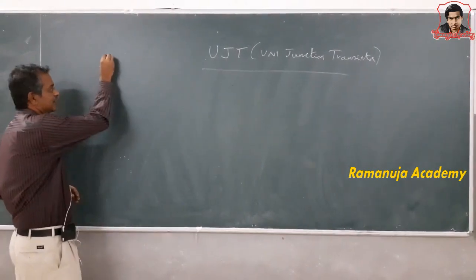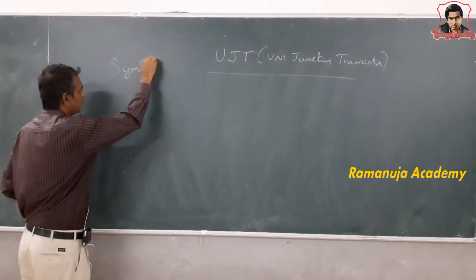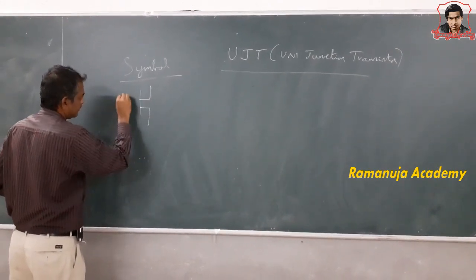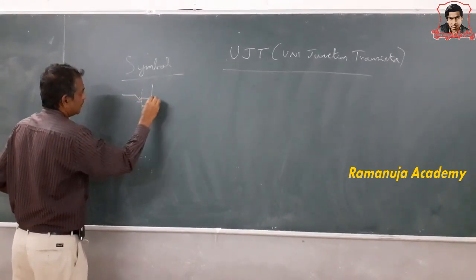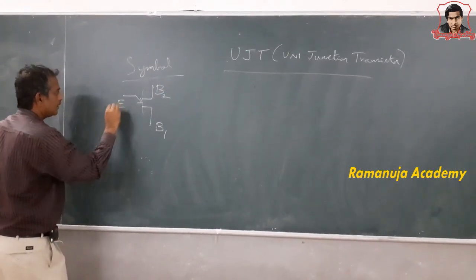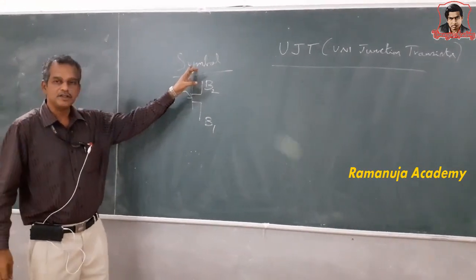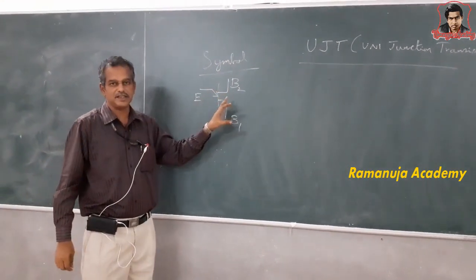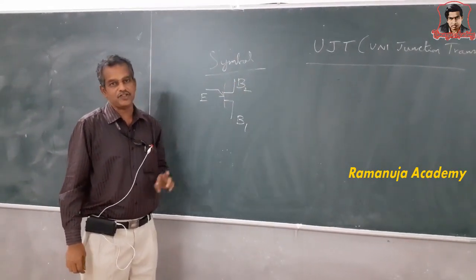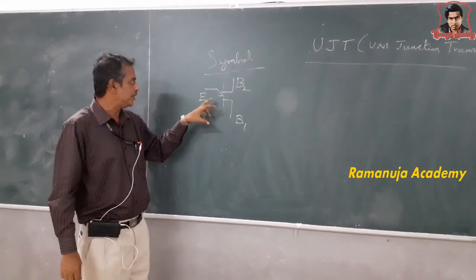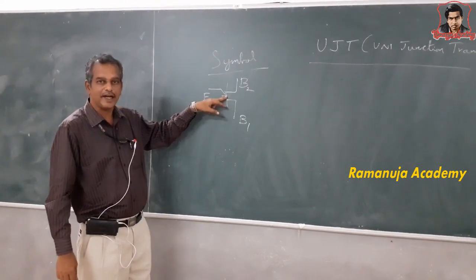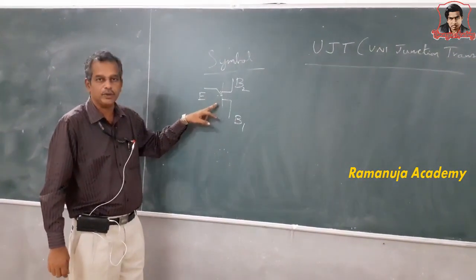First we will see the symbol. The symbol shows three terminals: emitter, base 1, and base 2. When drawing the symbol, it should be noted that the emitter is closer to B2 than to B1.